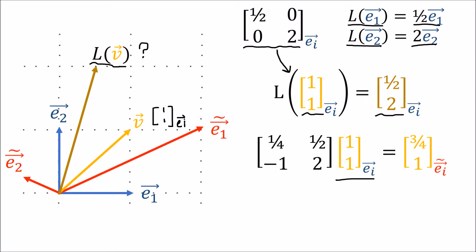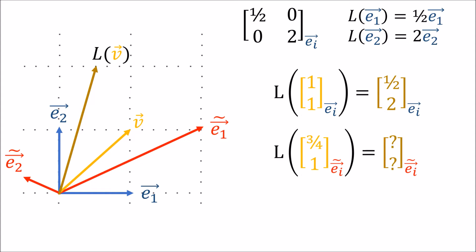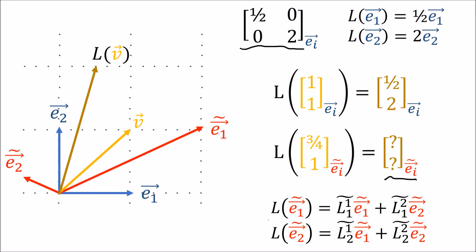If we take these components in the old basis and apply the backward transform, we can get the components in the new basis — remember we use the backward transform since vector components are contravariant. From here we might ask: what are the components of the output vector in the new basis? We can't use this matrix anymore since it only works in the old basis, so we need to find a new matrix that builds output vectors using the E-tilde basis vectors. We need to figure out these L-tilde coefficients.